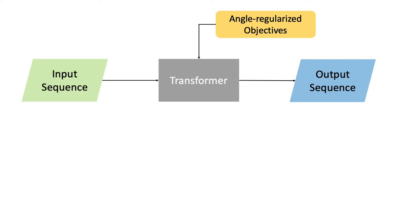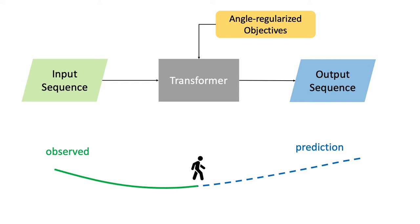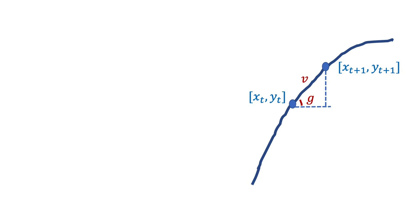Given observed pedestrian trajectory coordinate history, the task is to predict trajectory coordinates at future time steps. The relative displacement v and instantaneous slope angle g at each time step can be calculated.